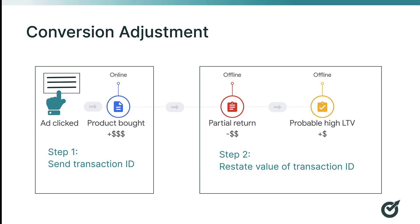So by using conversion adjustments, you can actually go back into Google after that initial purchase which you reported in step one. And now in step two, you can actually adjust that value. And so to do this, in step one, you have to give Google just a little bit more information. The specific information is going to be the transaction ID or the order ID, but really that's just some unique string.